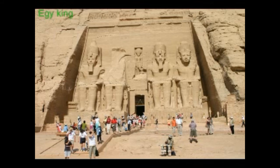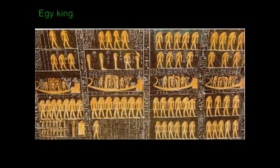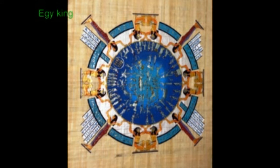Egyptian seasons corresponded with the flooding of the Nile: Akhet, from June to October; Peret, the growing season, from October to February; and Shemu, the harvest season, from February to June. Akhet included the months of Thoth, Phaophi, Athyr, and Choiak; Peret included Tybi, Mekhir, Phamenoth, and Pharmuthi; and Shemu included Pachons, Payni, Epiphi, and Mesore.